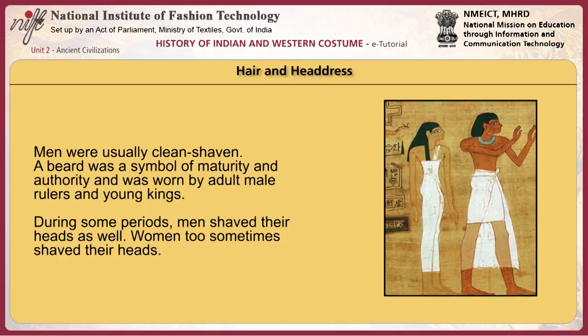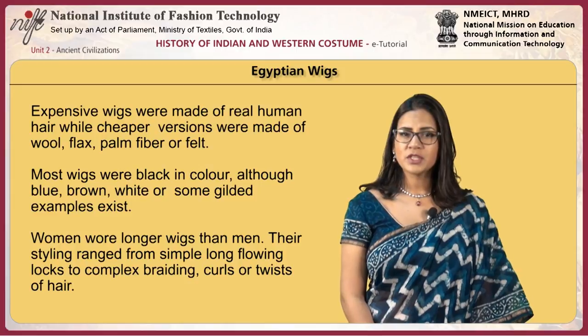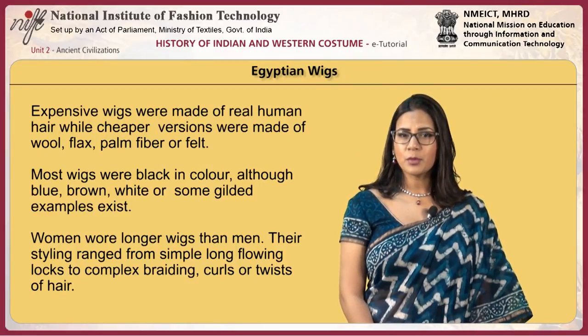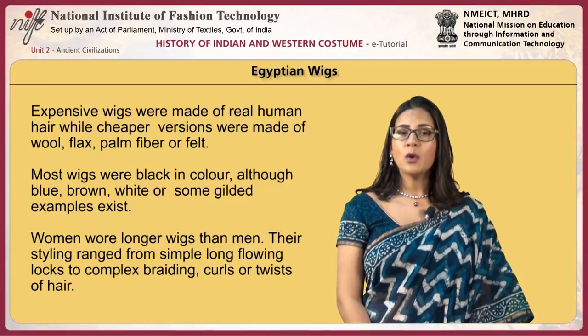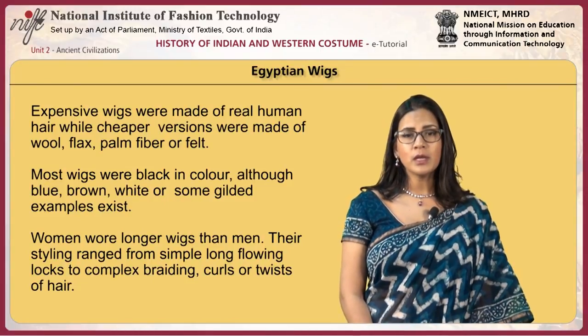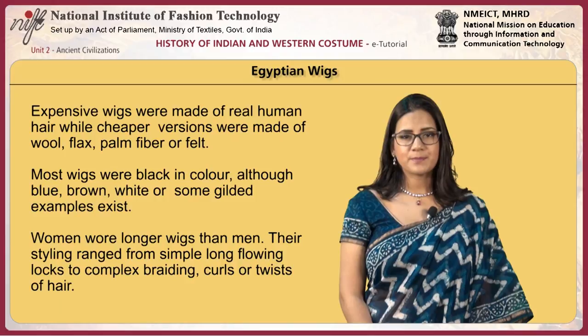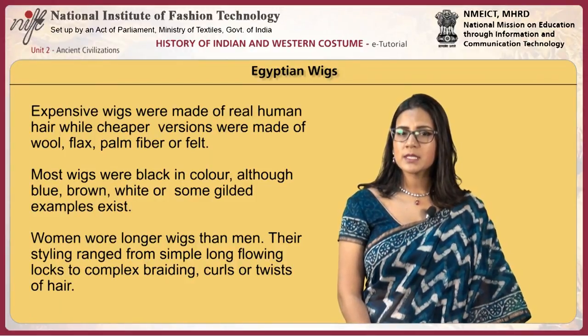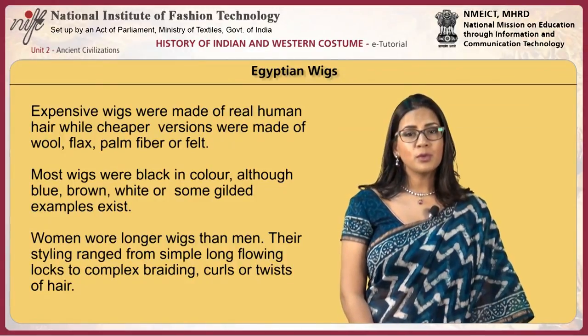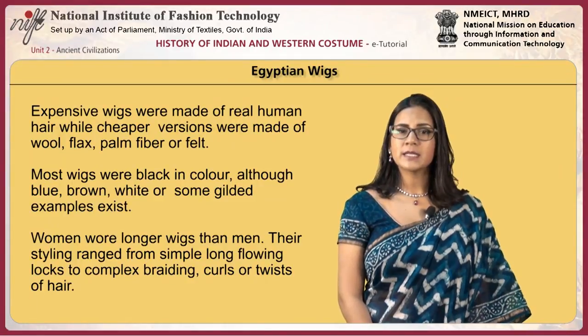Men were usually clean-shaven. A beard was a symbol of maturity and authority and was worn by adult male rulers and young kings. During some periods, men shaved their heads as well, and women too sometimes shaved their heads. Wigs were worn over shaved heads or hair. Expensive wigs were made of real human hair while cheaper versions were made of wool, flax, palm fiber or felt. Most wigs were black in color, although blue, brown, white or gilded examples also exist.